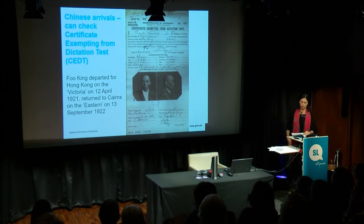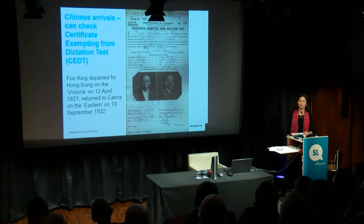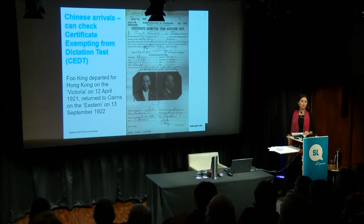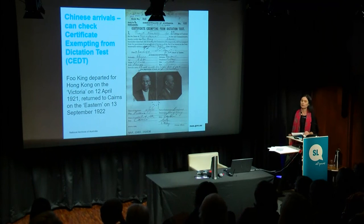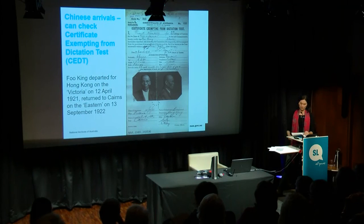If you're trying to find arrivals from China, it is a good idea to search our collection of CEDTs — Certificates Exempting from the Dictation Test. Chinese people needed to have a CEDT if they were travelling in and out of Australia, so it allowed them to get back into the country when they returned home. Not only that, but they provide photographs and are very beautiful records.